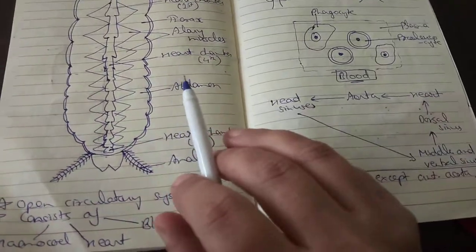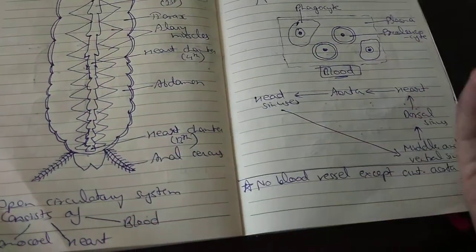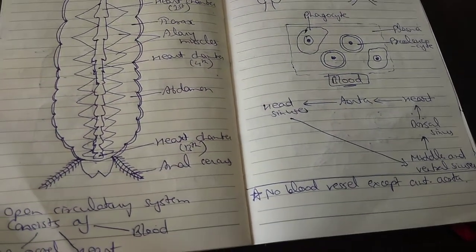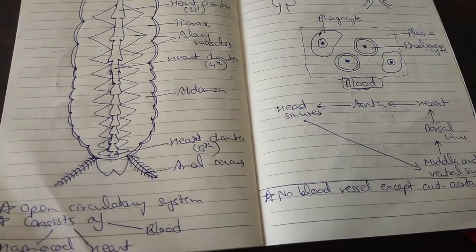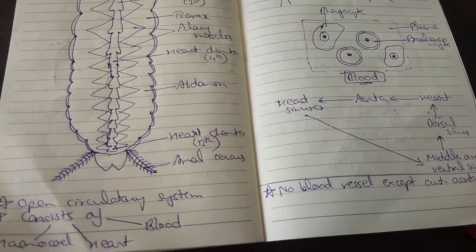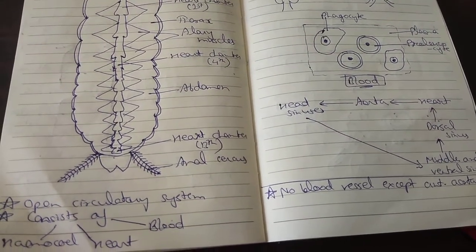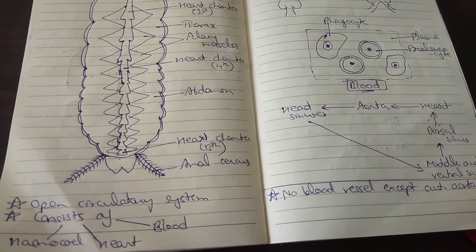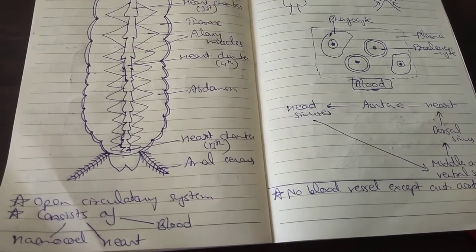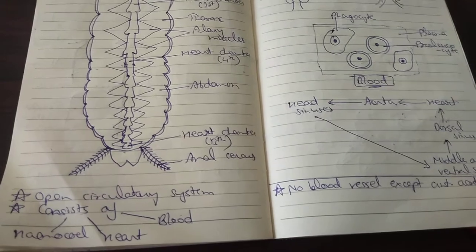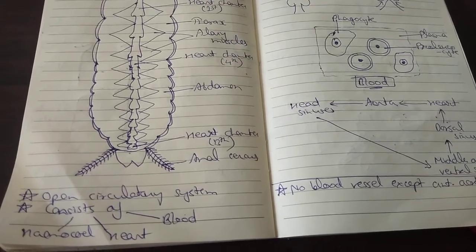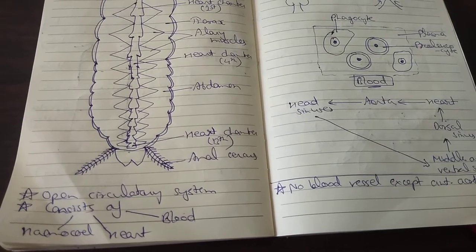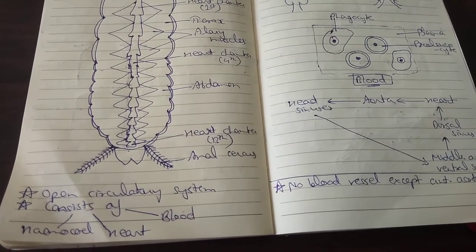Therefore no respiratory pigment is required. The functions of blood are: it keeps the tissue moist, it absorbs food from the alimentary canal and distributes it, it brings nitrogenous waste from all parts of the body to the excretory organs for elimination, it carries defensive phagocytes to the places of infection, it transports secretions of the ductless glands to the required organs, and it brings carbon dioxide near the body wall for diffusion out of the body.